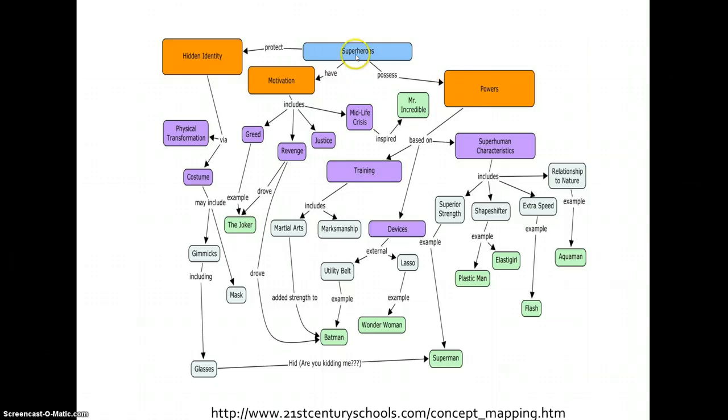For example, superheroes possess powers. Their powers are based on superhuman characteristics. This particular example is fairly robust, and I also like the use of color.